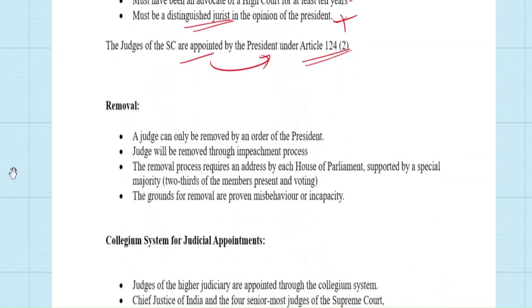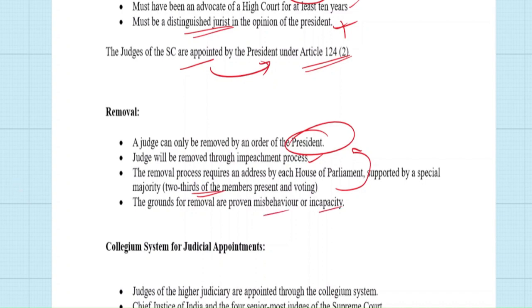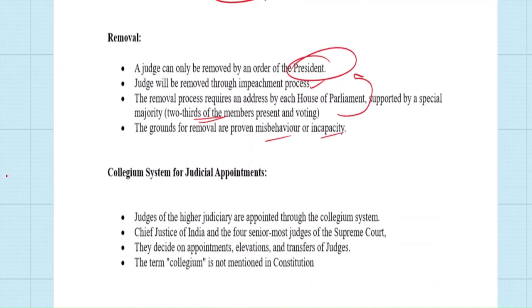Judges of the Supreme Court are appointed by the President. Removal of judges happens through the impeachment process — only by an order of the President. The impeachment resolution must be passed by both Houses of Parliament with a two-thirds majority of members present and voting. Once passed, it goes to the President for assent, and the judge is finally impeached. The grounds for removal are misbehavior and incapacity.